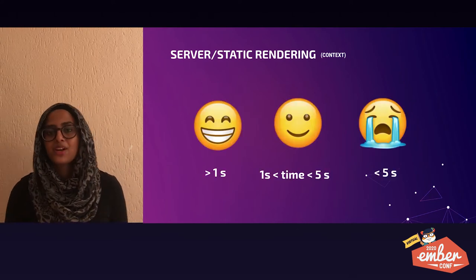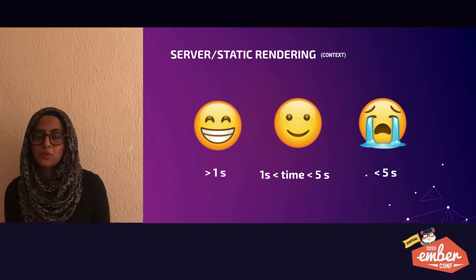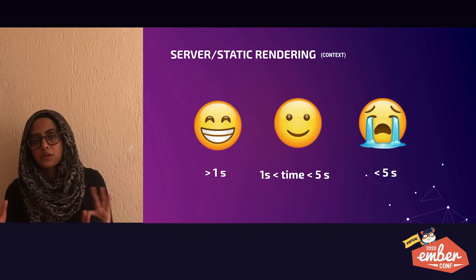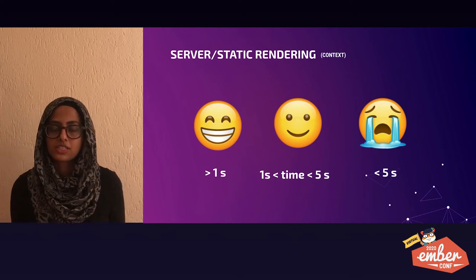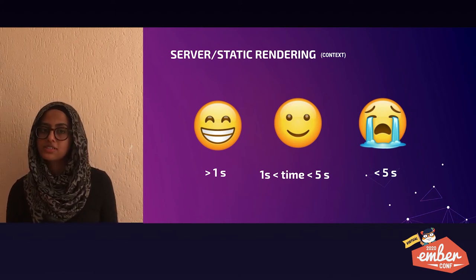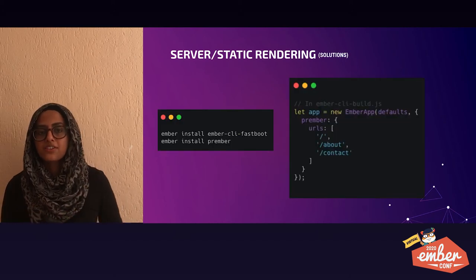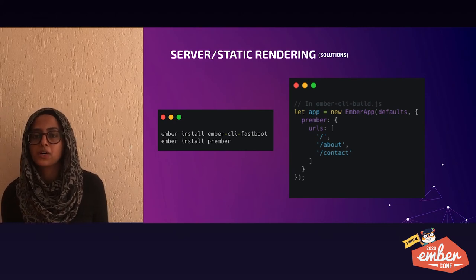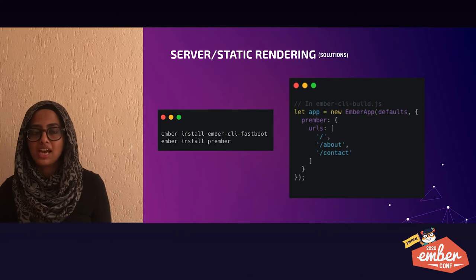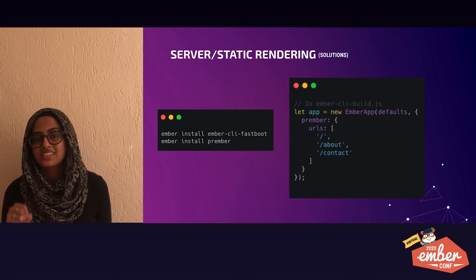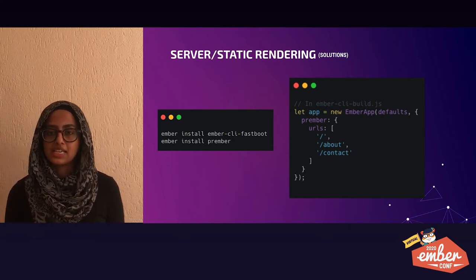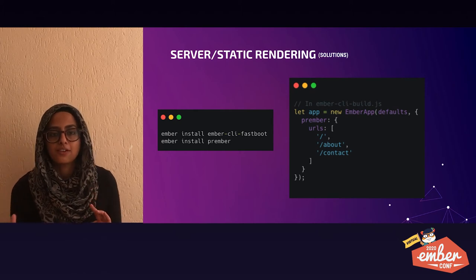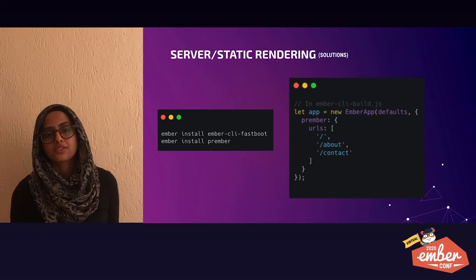When our first contentful paint is less than one second, users are really happy. Between one to three seconds, users are usually a little less pleased but still pretty happy. Over three seconds starts causing frustration, and over five seconds users have completely lost interest. It's really simple to server-side render pages in Ember — we just install Fastboot and Prember, which static-renders the application and allows us to pre-render a list of URLs into static HTML files at build time. The pages can then be served statically with a fast first paint of the HTML content.